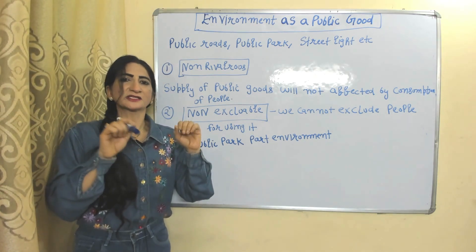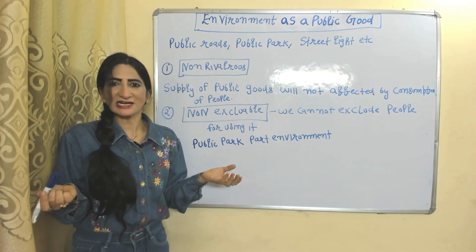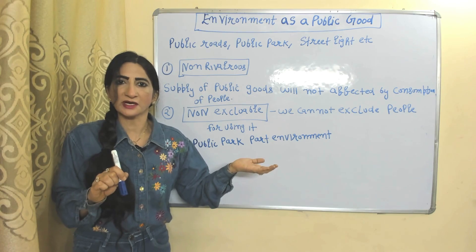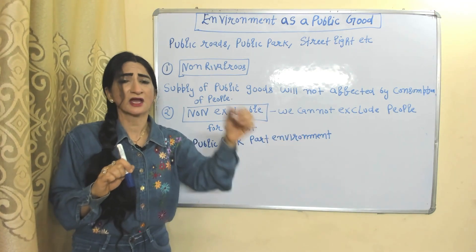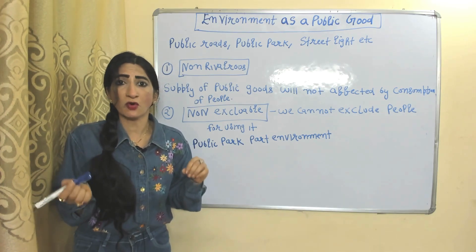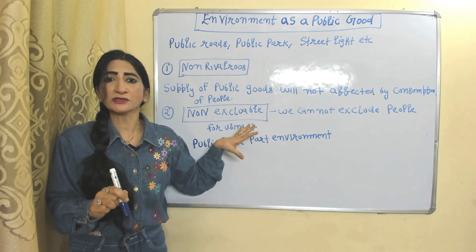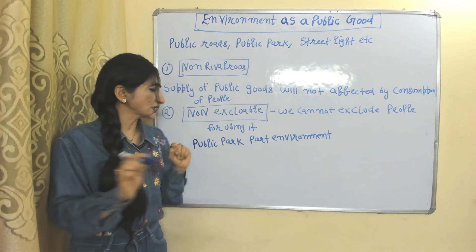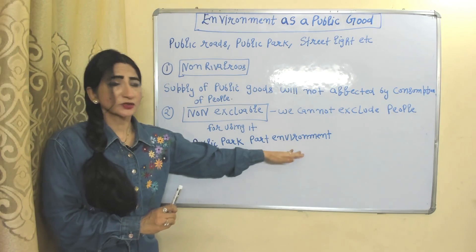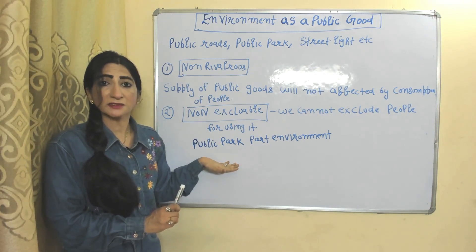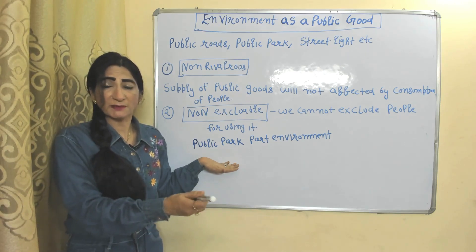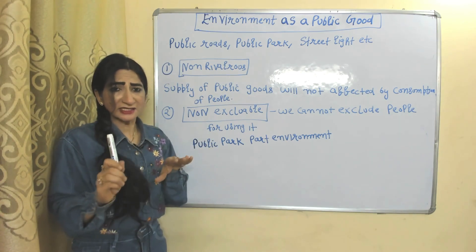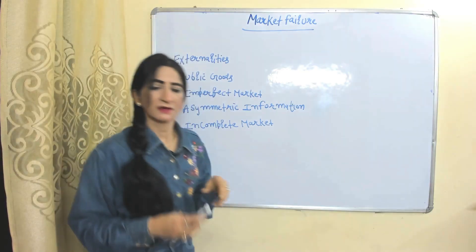Environment as a public good: public goods are provided by government, for example public parks, public roads, streetlights, etc. Public goods are non-rivalrous — that means the supply of public goods will not reduce no matter how many people are using it. For example, the supply of streetlight will not reduce no matter how many people are using it. Public goods are also non-excludable — that means you cannot exclude any individual from using it. For example, a public park is part of the environment; many people come to the park and make it dirty, but you cannot exclude these people from using it even if they are not paying any tax to the government for repairing it.